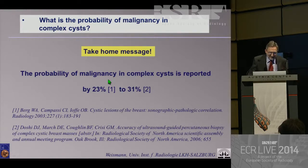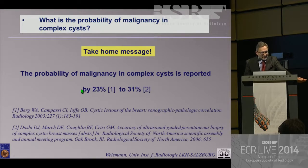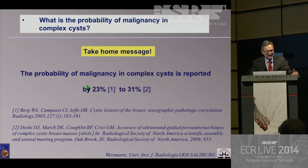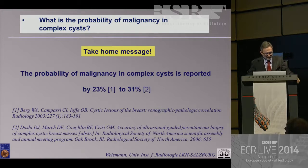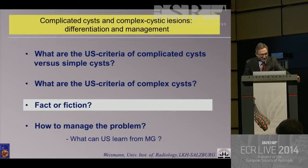The take-home message: the probability of malignancy in complex cysts is reported in the literature as 23% to 31%. That means if you have a complex cyst, you cannot just follow it — this is definitely not a watch-and-wait situation. You have to go for histology and clarify the pathology behind it.